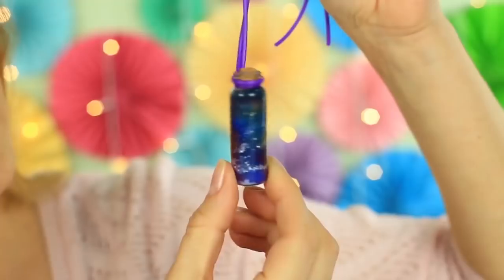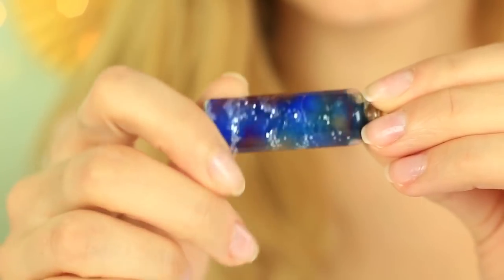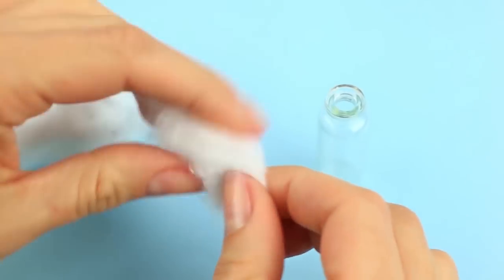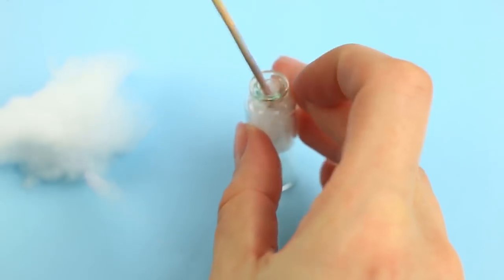Now try another idea. What about a space bottle necklace? Okay, let's do it! Tear off a small cotton piece and put it in the vial.